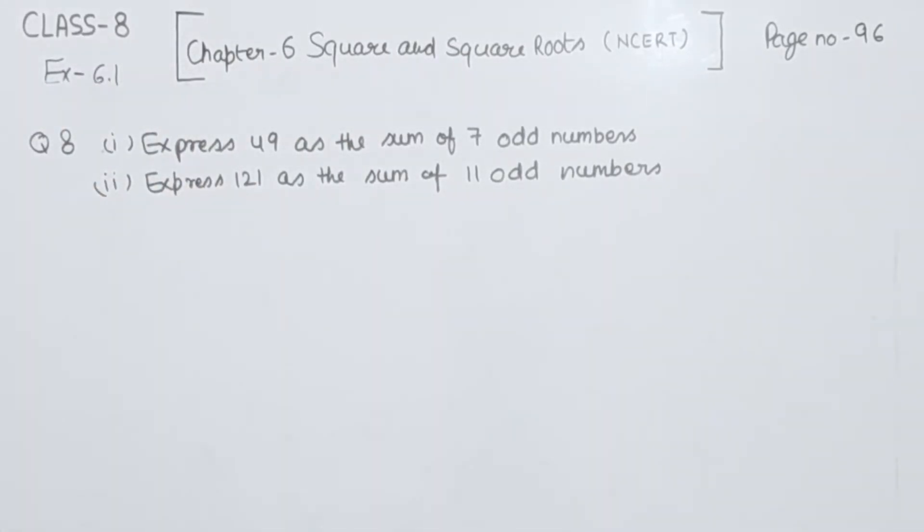In the question we have two parts. The first one is express 49 as the sum of 7 odd numbers, and the second part is express 121 as the sum of 11 odd numbers.